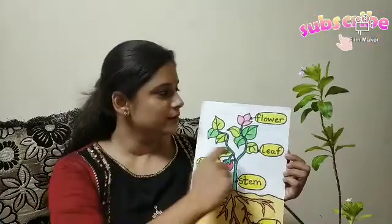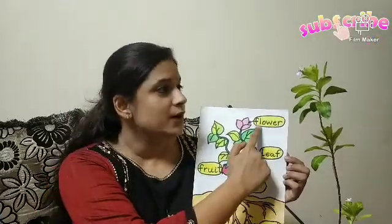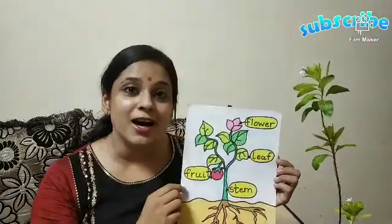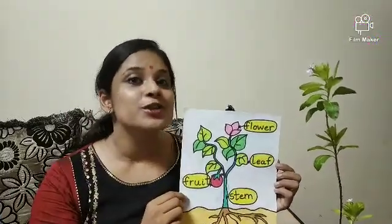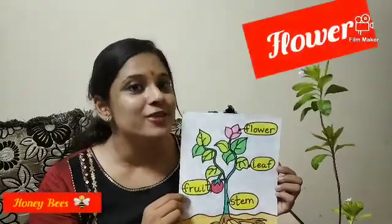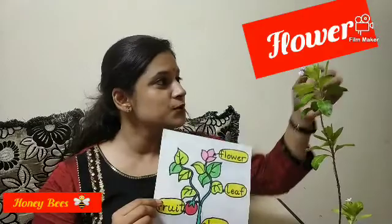Let's start with the first part, which is flower. Can you see the flower over here? This pink colour flower. So this is a part of the plant.